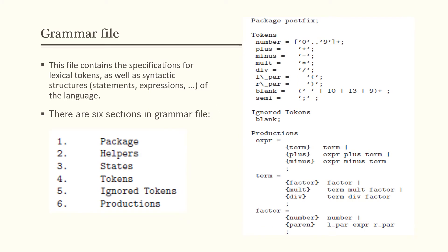What is a grammar file? A grammar file is a file that contains specifications for lexical tokens as well as syntactic structure — things like statements and expressions of the language. In a grammar file, there are six sections: package, helpers, state, token, ignore token, and productions. On the right side here is an example of a grammar file.